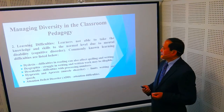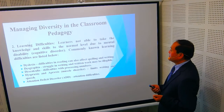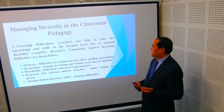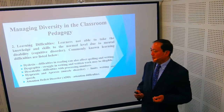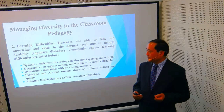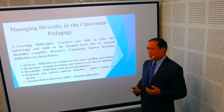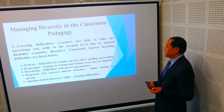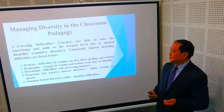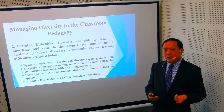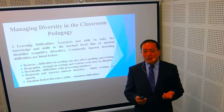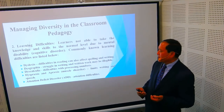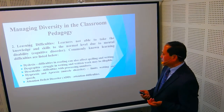Learning difficulties occur when learners are not able to acquire knowledge and skills to the normal level due to mental disability or cognitive disorder. Commonly known learning difficulties include: number one, dyslexia — difficulties in reading which can also affect spelling and writing; number two, dysgraphia — struggling in writing, with written work that may be illegible; number three, dyscalculia — difficulties in numerical work like adding, subtracting, dividing, and multiplying; and number four, dyspraxia and apraxia — muscle disorders that limit writing and speech.